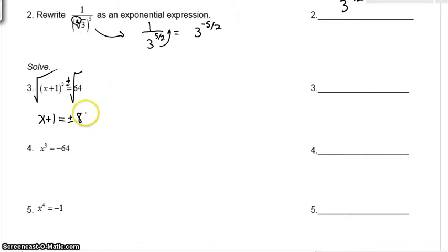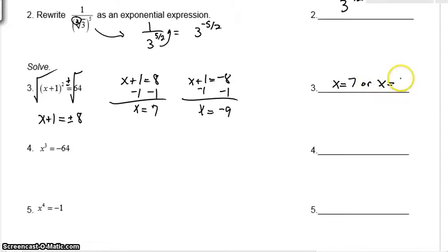This is going to be two different equations. You'll have x plus 1 equals 8, or x plus 1 equals negative 8. And as we solve, we're going to minus a 1 on both sides. We get x is equal to 7. We have to subtract a 1 on both sides here as well. Negative 8 minus 1 is negative 9. So we do, in fact, get two solutions. We get x equals 7, or x equals negative 9.